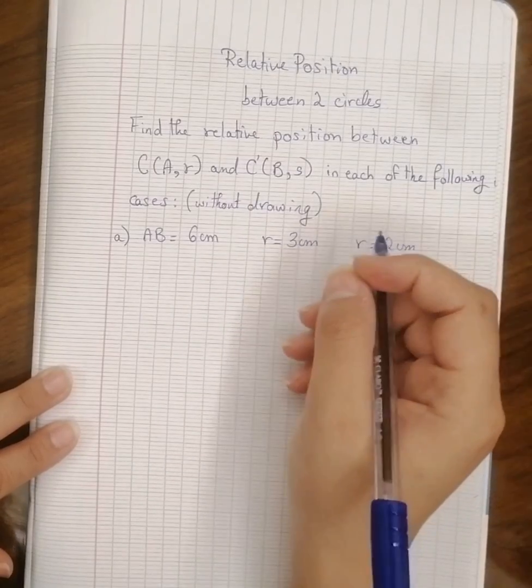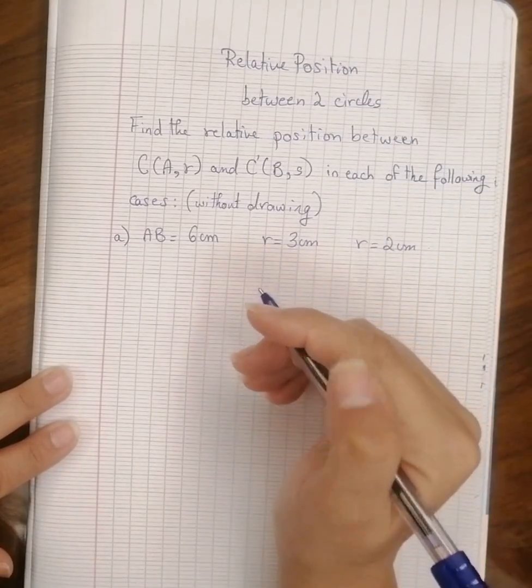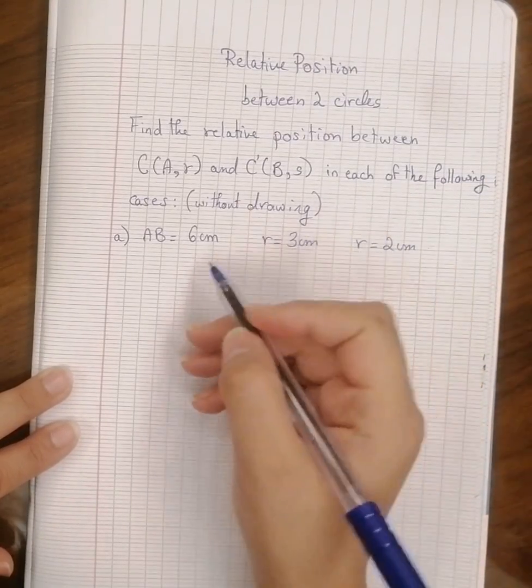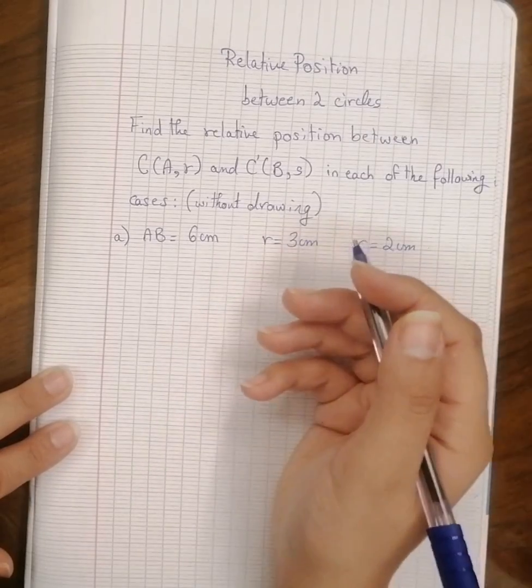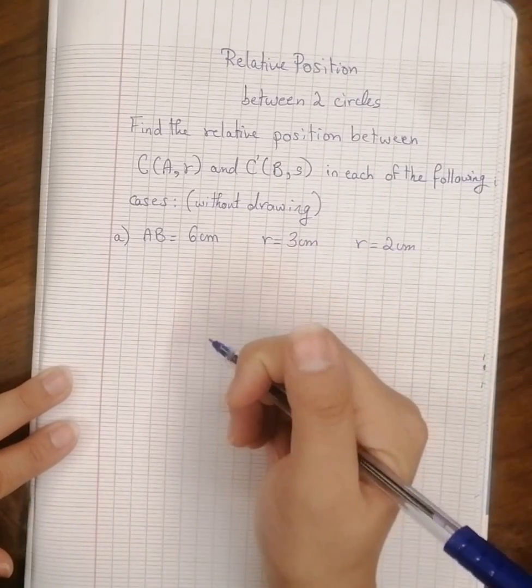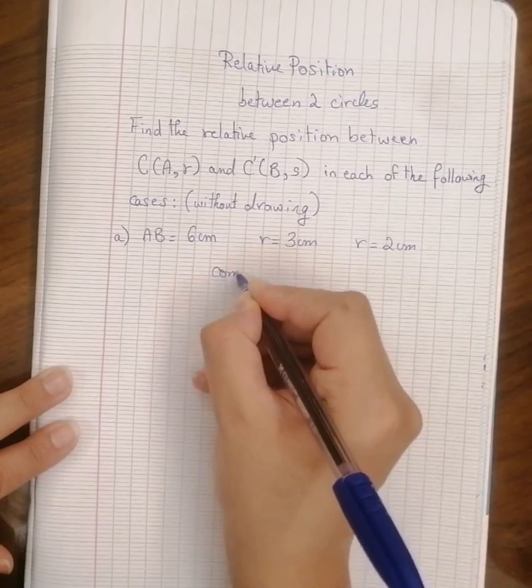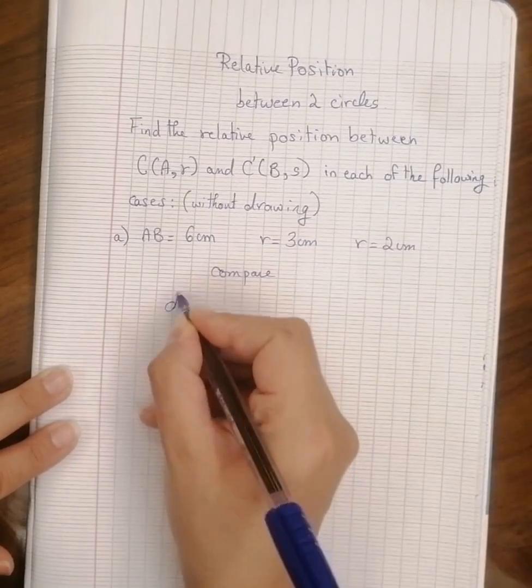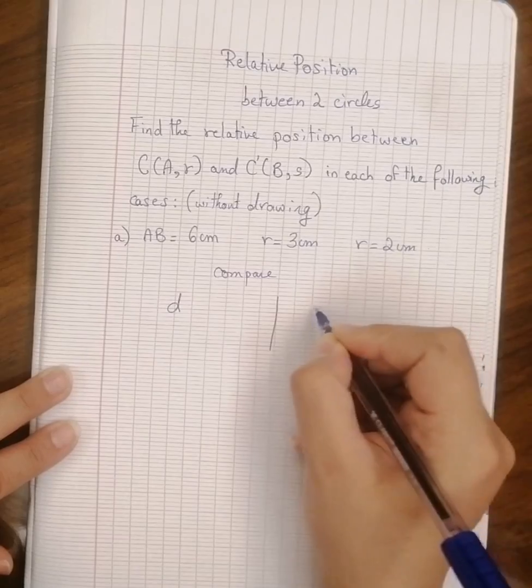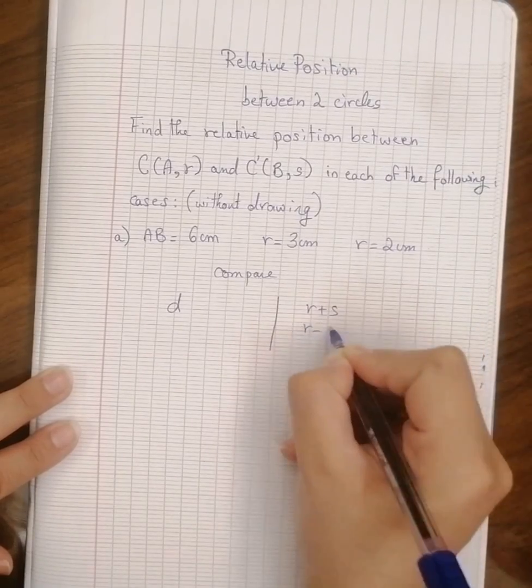A distance greater than r plus s, or distance less than r minus s. So we have to compare between the distance and r plus s, and r minus s.